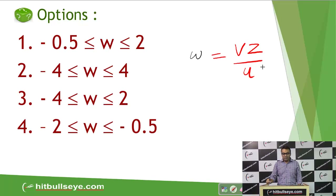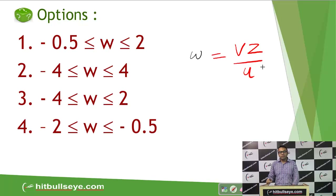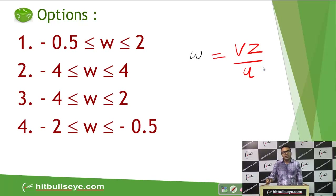In this question we have to find the minimum and maximum possible value for W, and W is a fraction VZ upon U. If I want to maximize any fraction, I have to maximize the magnitude of the numerators and minimize the magnitude of the denominator.